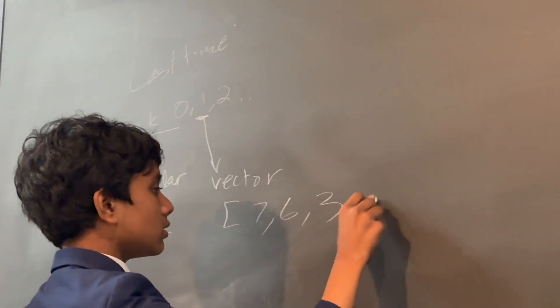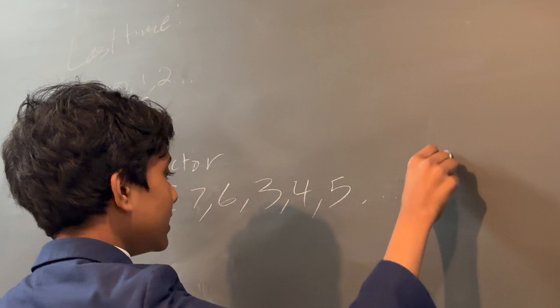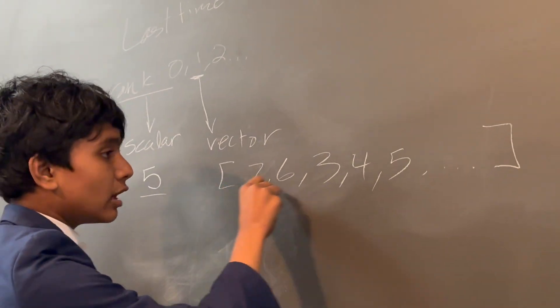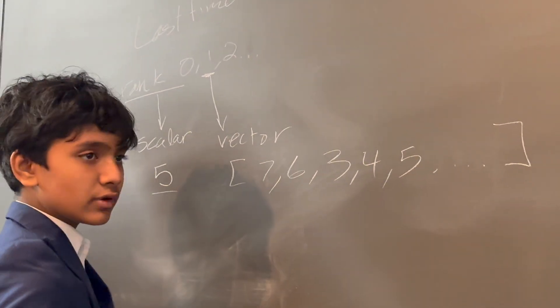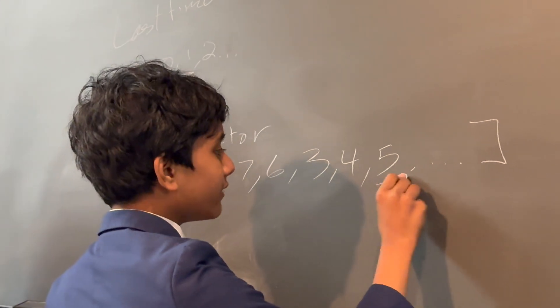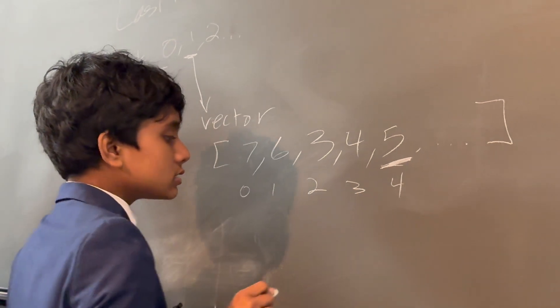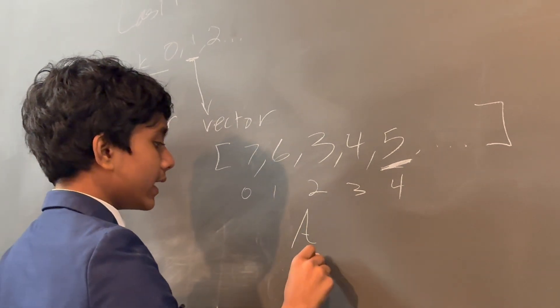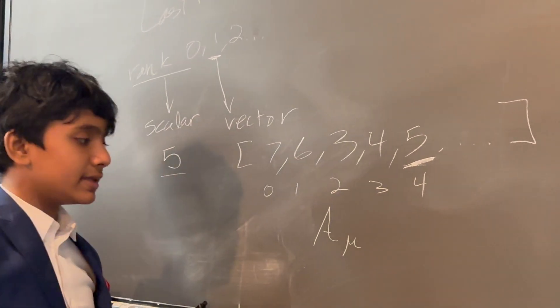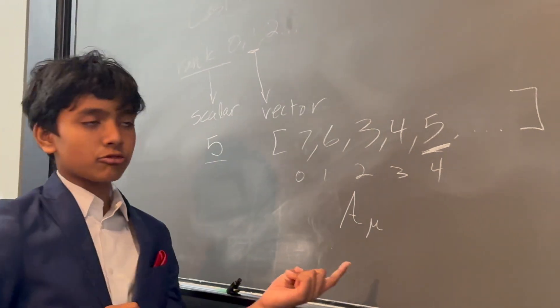Rank 1 tensors are also known as vectors, and they're kind of like arrays in coding, if you do that kind of stuff. So, you need one index to specify what you want to get out of it. So, for example, you want to get 5 out of this array. You need to specify 0, 1, 2, 3, 4. So, we write an element of this as a with the index as a subscript, mu.